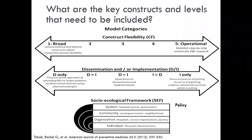Models can also be categorized based on their focus on dissemination and or implementation. Dissemination is the active approach of spreading evidence-based interventions to the target audience via determined channels using planned strategies. Implementation is a process of putting to use or integrating evidence-based interventions in place within a setting. In addition, models can be categorized based on the socio-ecological levels to which they apply.